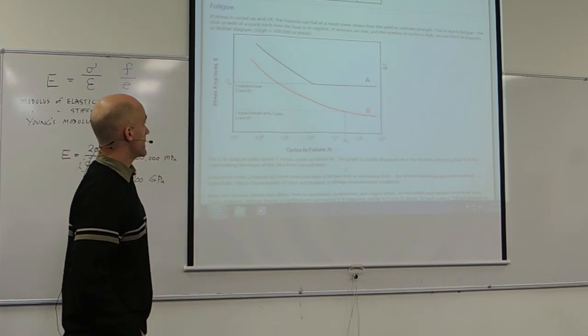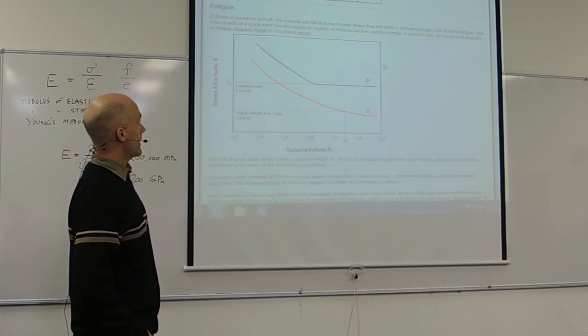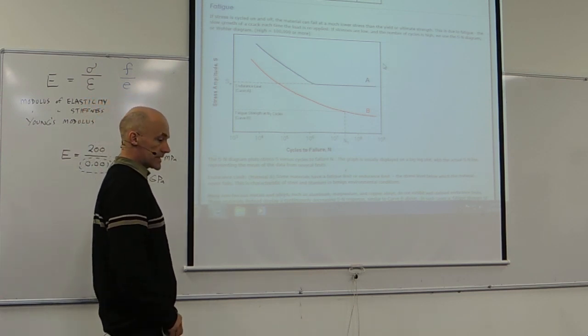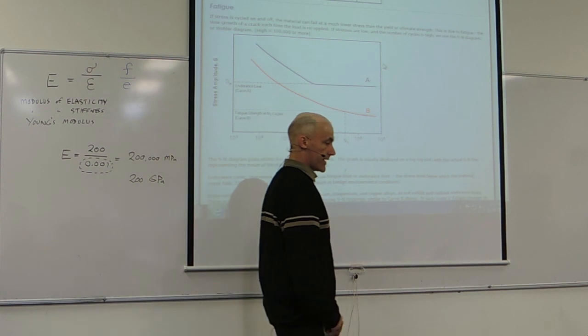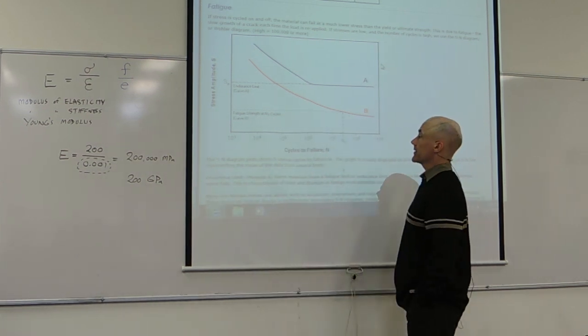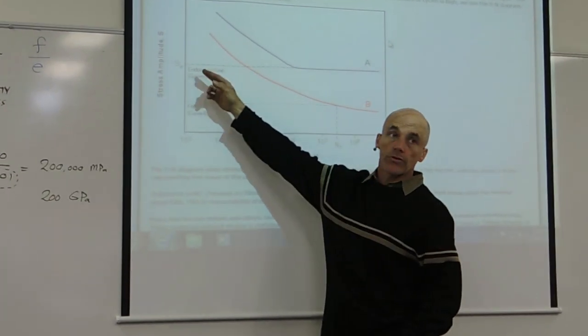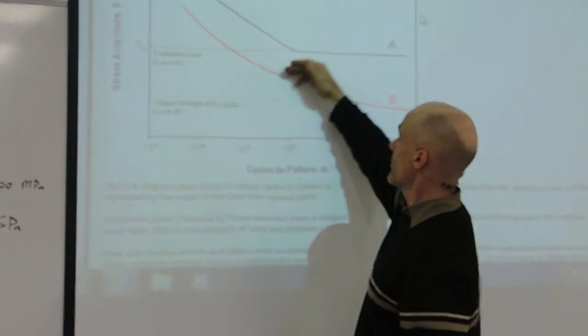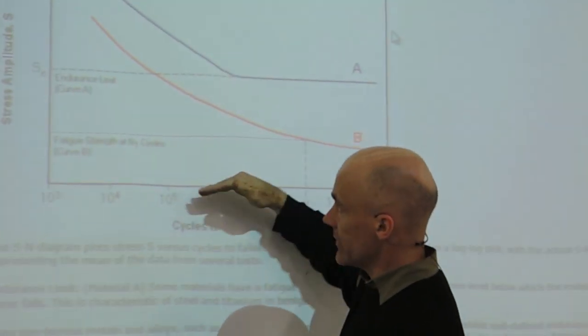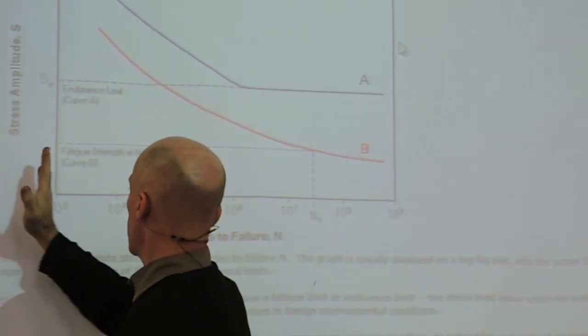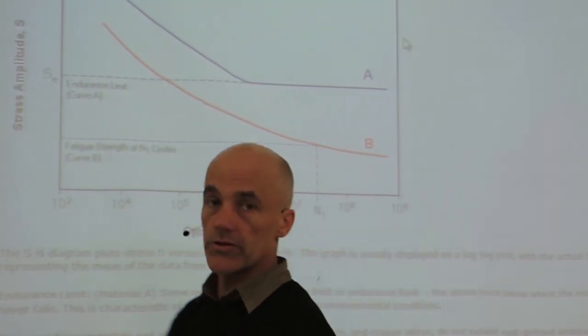The first thing about fatigue is there are two types of fatigue materials. This type A would be perhaps a steel, and type B looks more like aluminum. The difference between those two, you'll notice the type A has what's called an endurance limit, which means provided you stay underneath this stress, so the vertical is the stress, and this is how many times you stress it.